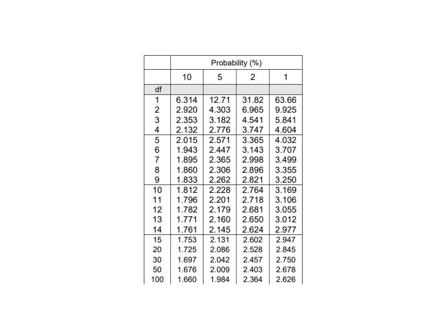You don't need to memorise the critical value table, but you should be able to find the right value. With degrees of freedom of 7, we look at that row. In biology, unless told otherwise, we look for a 95% confidence level — i.e., less than 5% probability that results were due to chance. If yes, we can be more than 95% confident the difference is significant. This gives us a critical value of 2.365.